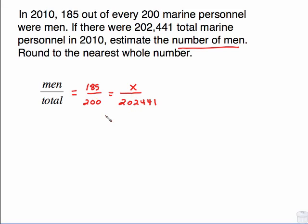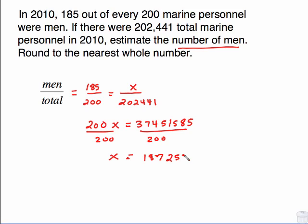We have a proportion set up, a fraction equal to a fraction. All you have to do is cross multiply. 200 times x gives us 200x. 185 times this 202,441 is 37,451,585. Simple equation. Divide both sides by 200.